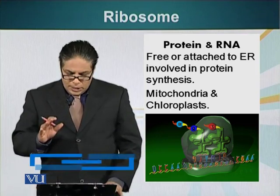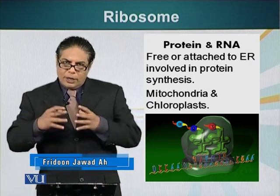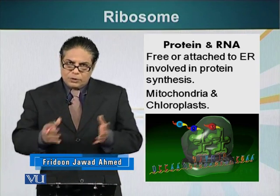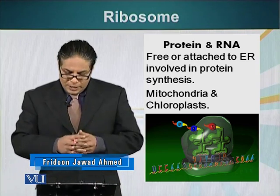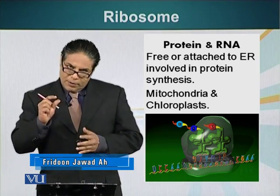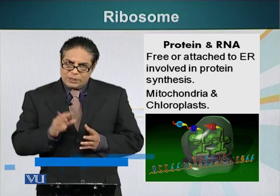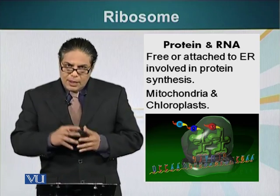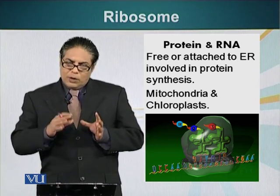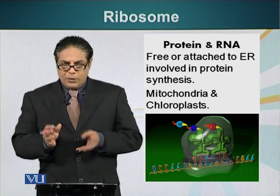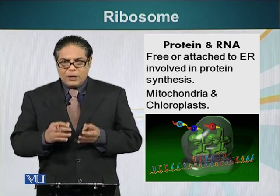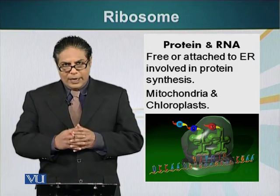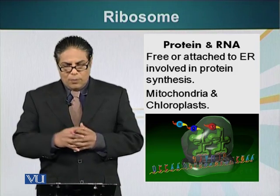Ribosomes can be free or attached to the endoplasmic reticulum. We saw in the animation that there were ribosomes attaching themselves to the endoplasmic reticulum. Ribosomes are also found in the mitochondria and chloroplasts, which are other types of cell organelles we will talk about later.